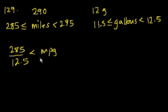And then the highest possible miles per gallon is the highest possible miles, which is 295, but we're never going to be able to quite get there. We're always going to be less than 295. And then the lowest number of gallons—you want to minimize the denominator—divided by 11.5.